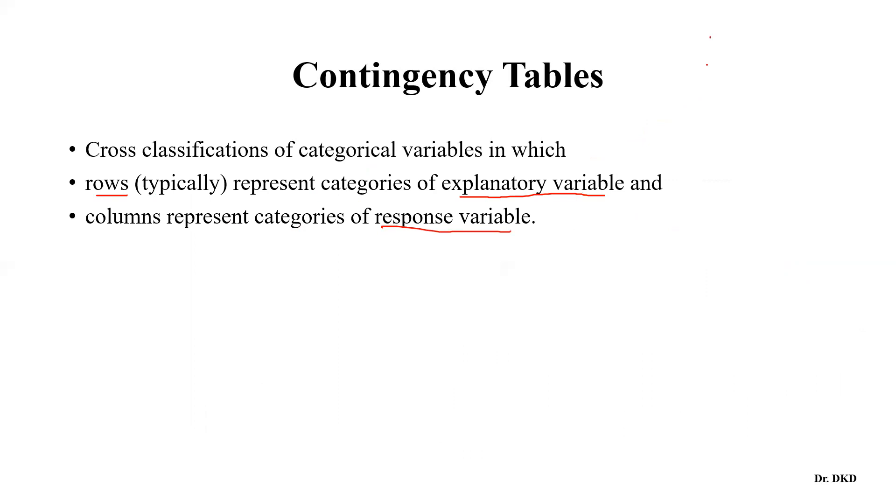Once we are going to create a table like this - this is the column and this is the row. So in columns, we always put the response variable, and in rows we always put the explanatory variable or independent variable. This is a very important point we need to understand.